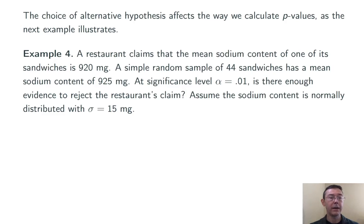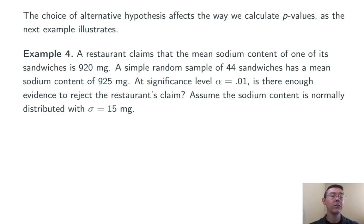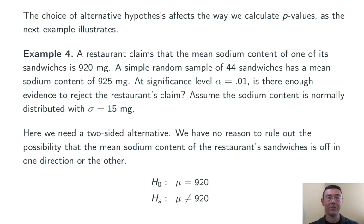Now, your choice of alternative hypothesis is going to affect the way the p-value is computed. A restaurant claims that the mean sodium content of one of its sandwiches is 920 milligrams. A simple random sample of 44 sandwiches has a mean sodium content of 925 milligrams. At significance level alpha equals 0.01, is there enough evidence to reject the restaurant's claim? Assume the sodium content is normally distributed with standard deviation 15 milligrams. In this case, we're going to use a two-sided alternative hypothesis, since we have no reason to rule out the possibility that the mean sodium content is greater than or less than 920 milligrams.